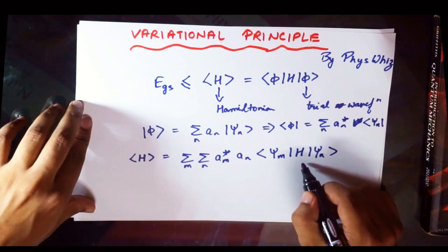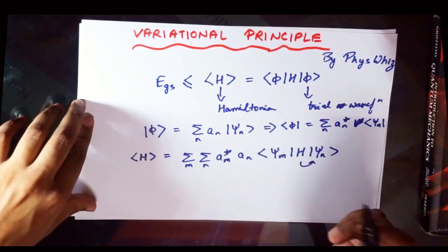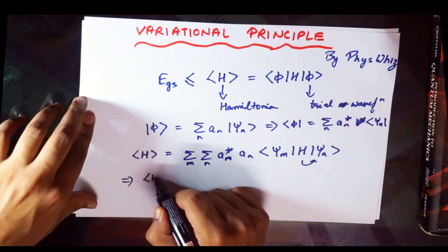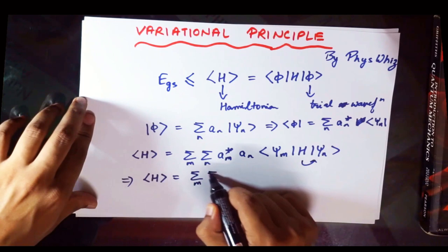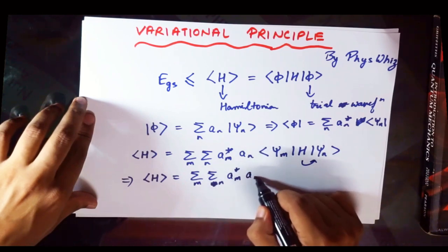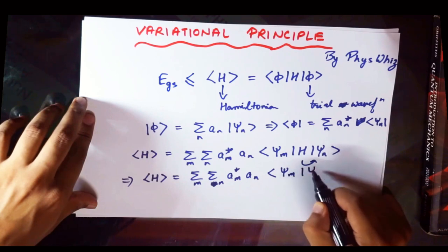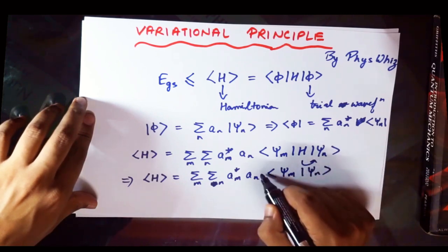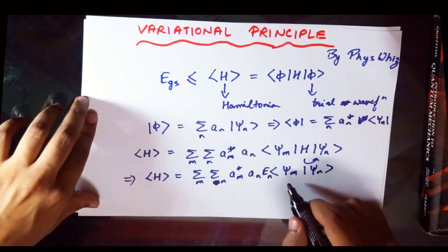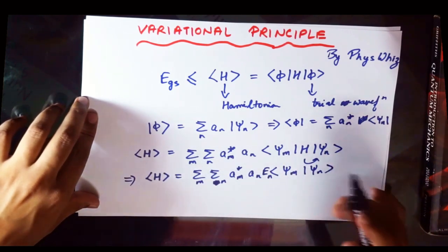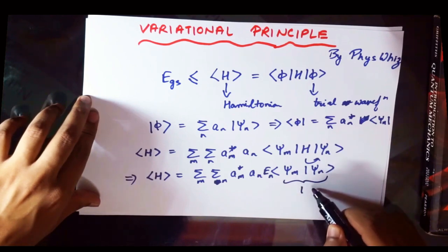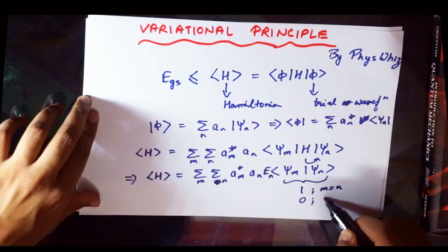Now we operate H on psi_n. Since H is the Hamiltonian operator and the psi_n are its eigenfunctions, it gives out the energy eigenvalues E_n. So the expectation value of H becomes a summation over m and n of a_m* a_n times psi_m psi_n with an E_n factor. Since the eigenfunctions are orthonormal, the inner product psi_m psi_n equals 1 if m equals n, and 0 if m does not equal n.